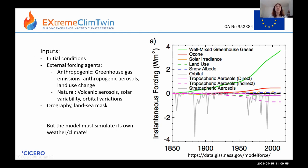Climate models simulate their own weather and climate without being told what to do, but we do provide initial conditions — essentially the starting point, perhaps from observations on a certain past date. We also specify external forcing agents: anthropogenic forcings like greenhouse gases, anthropogenic aerosols, and land use change, as well as natural forcings like volcanic aerosols and orbital variations. We also tell the model where mountains, sea, and land are, and then the model simulates its own weather and climate based on physical equations.